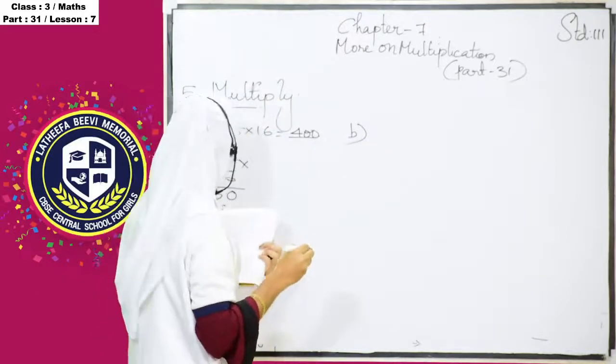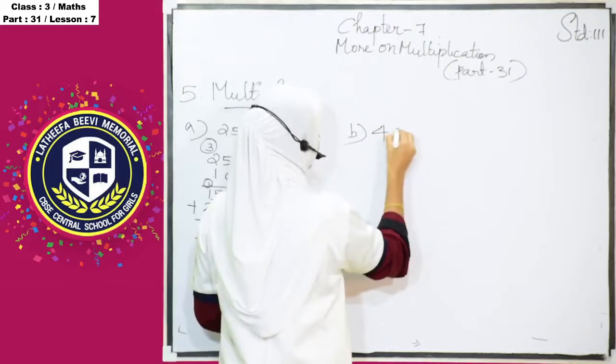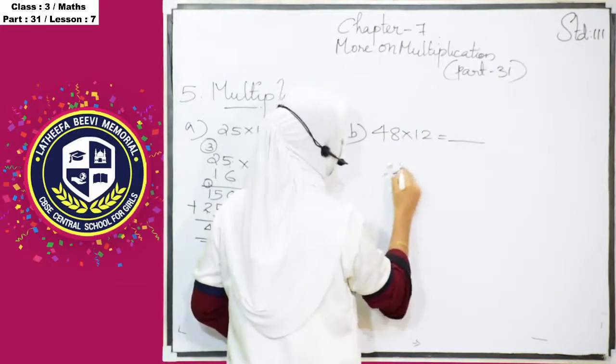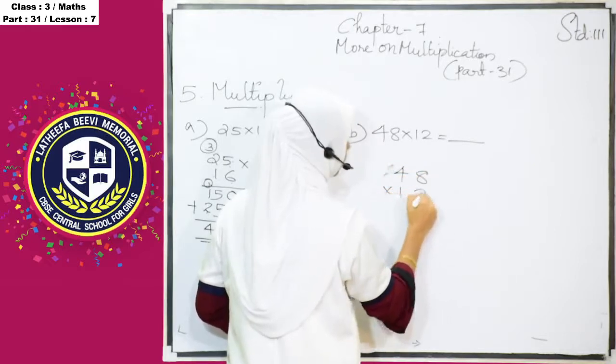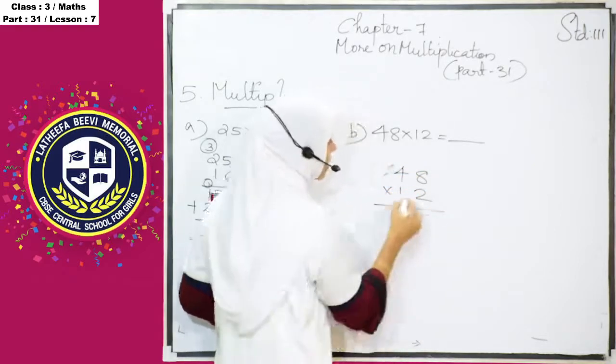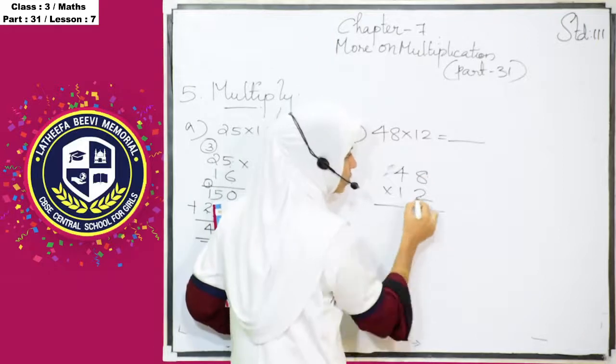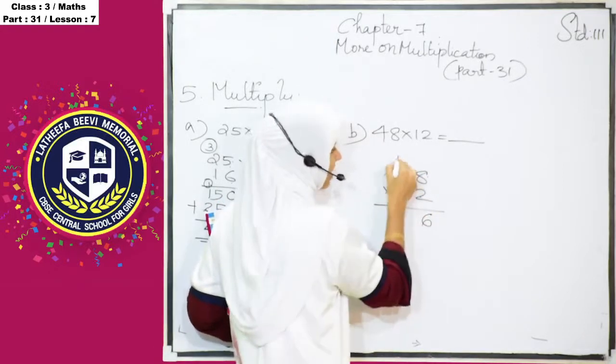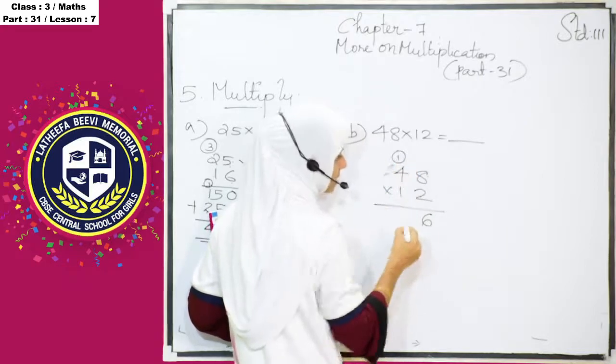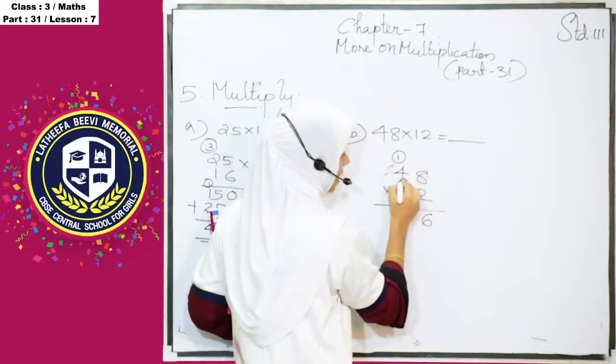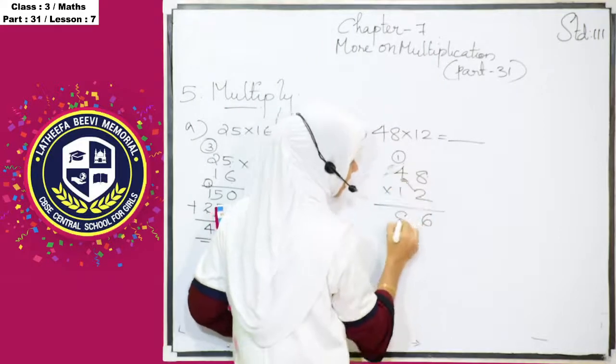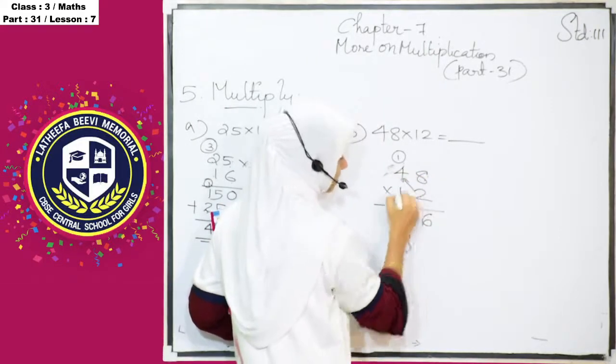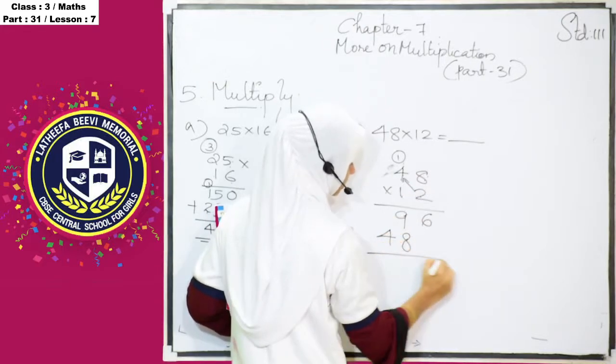48 into 12 is equal to dash. Again, 48 into 12, we have to do like this. 2, 8's are, we know that, 2, 8's are 16, 6, we have to write here, 1 is carry over to the tens place. 2 into 4. 2, 4's are 8, plus 1, 9. 1, 8's are 8, 1, 4's are 4.